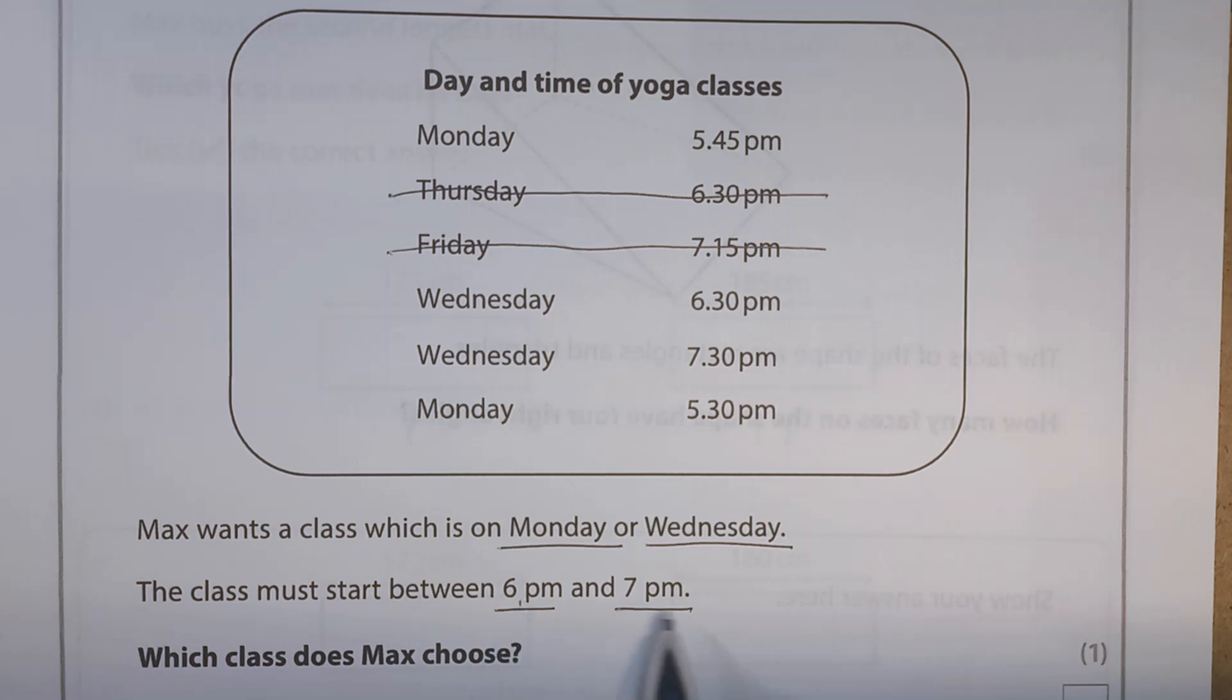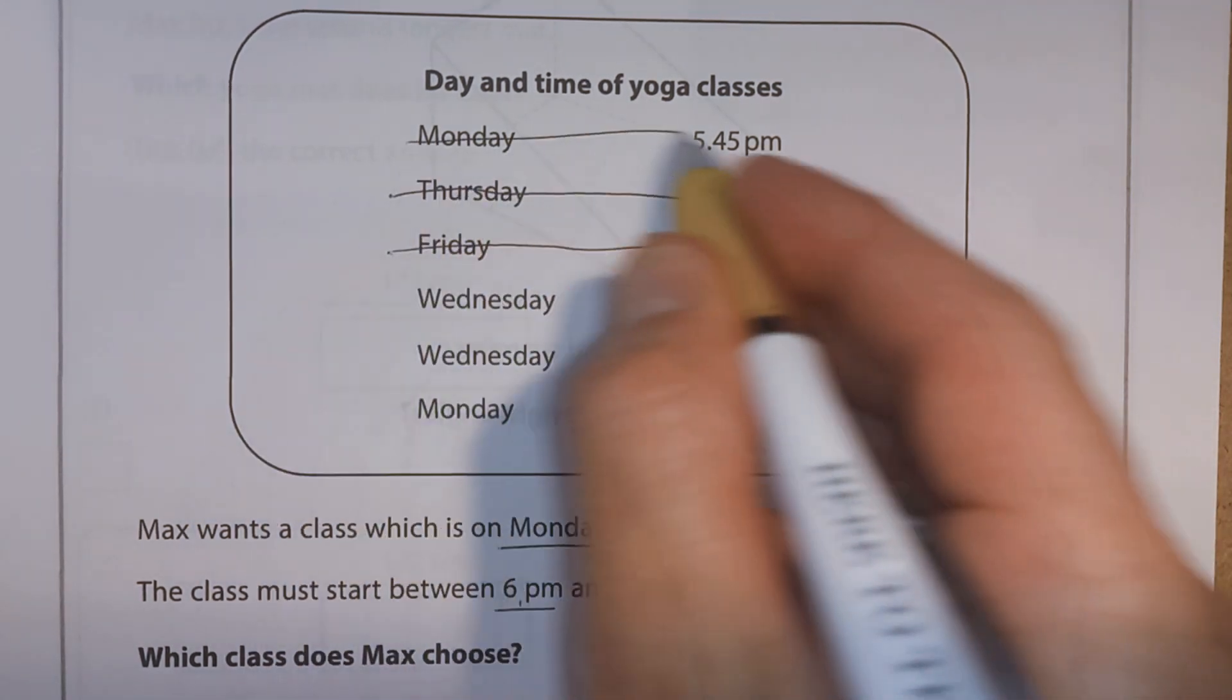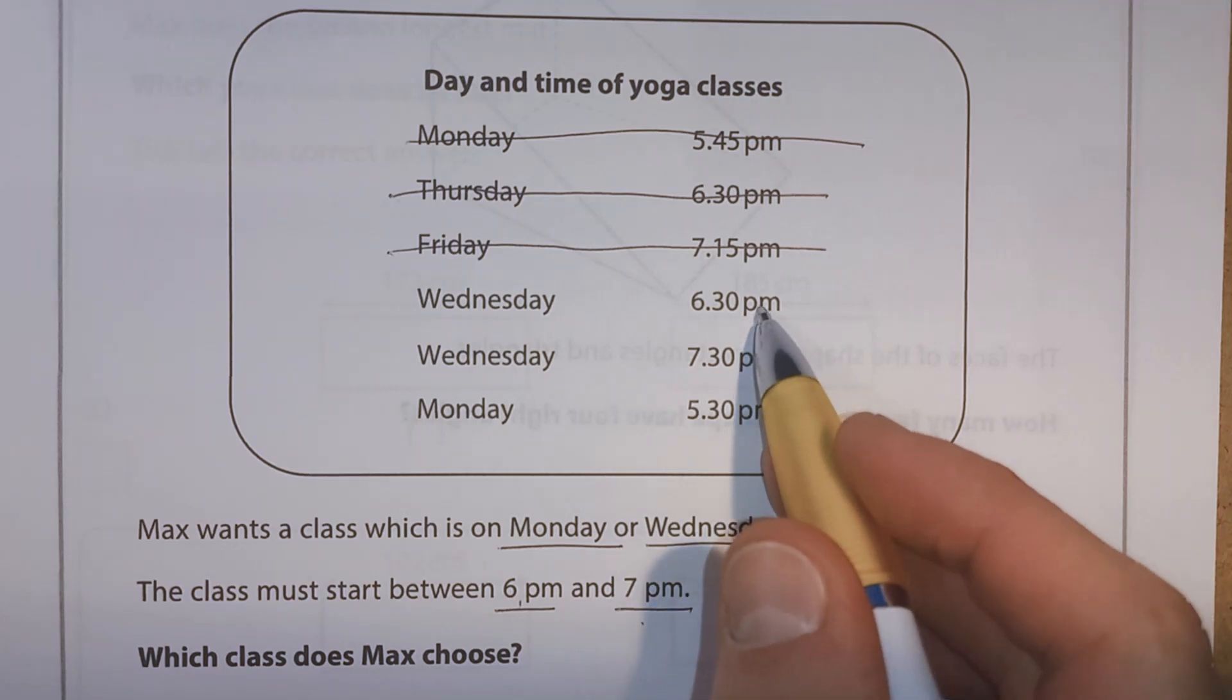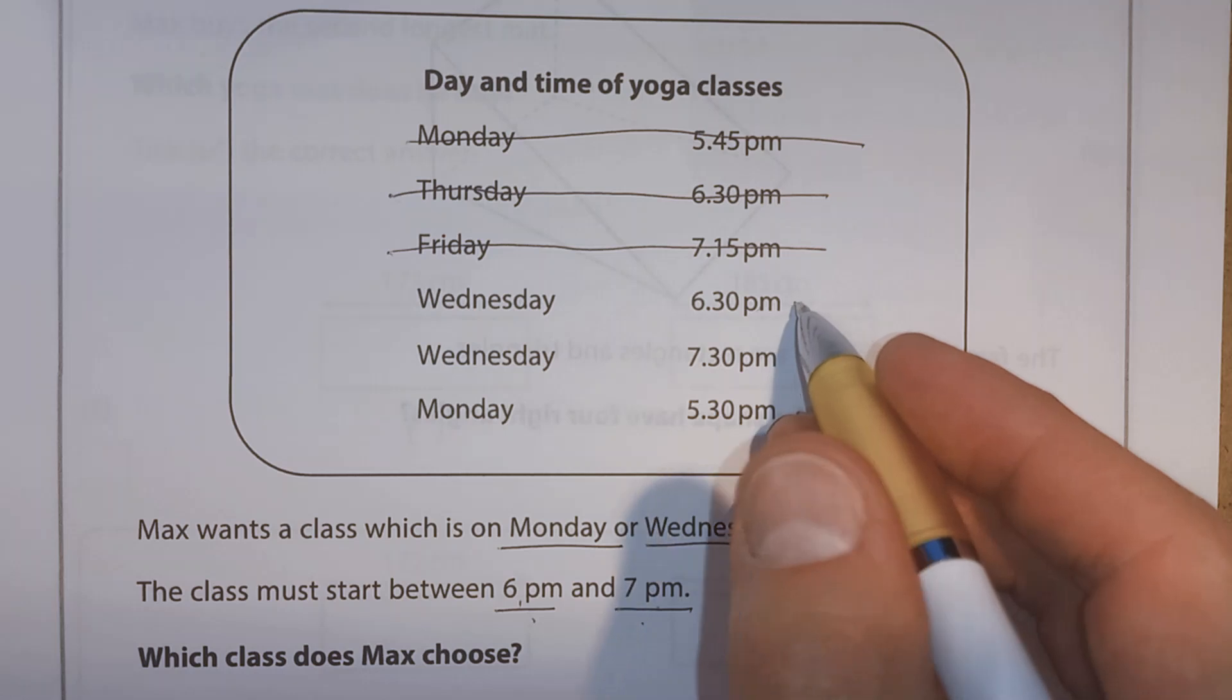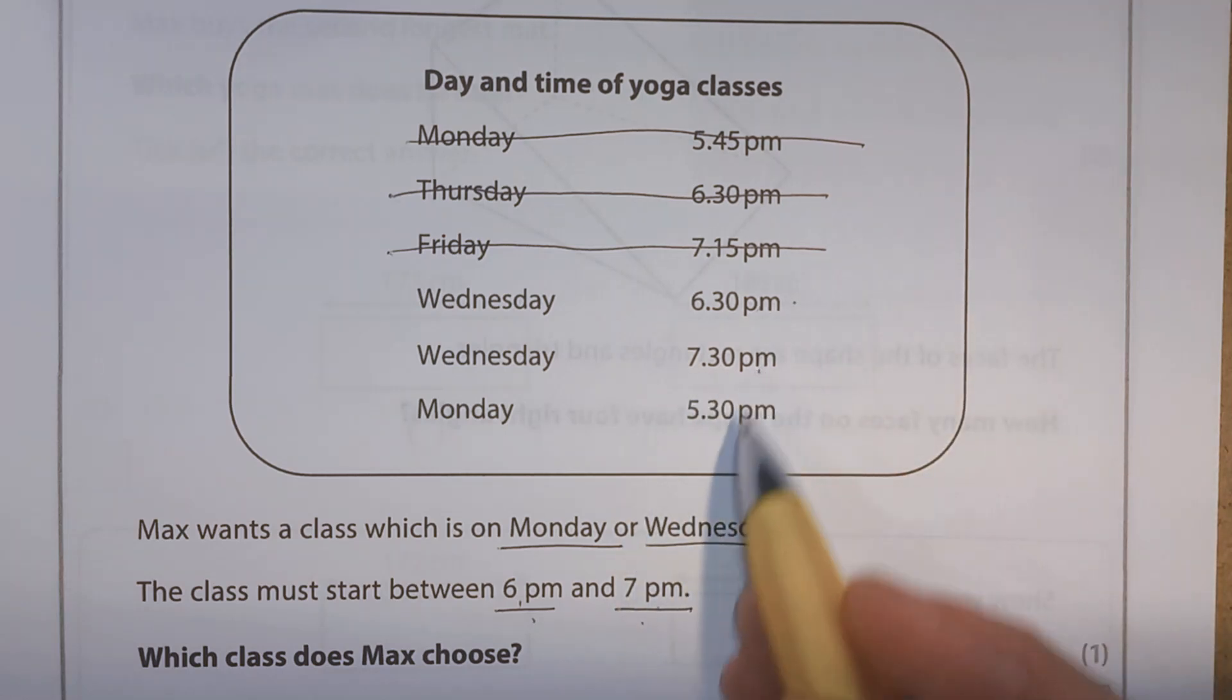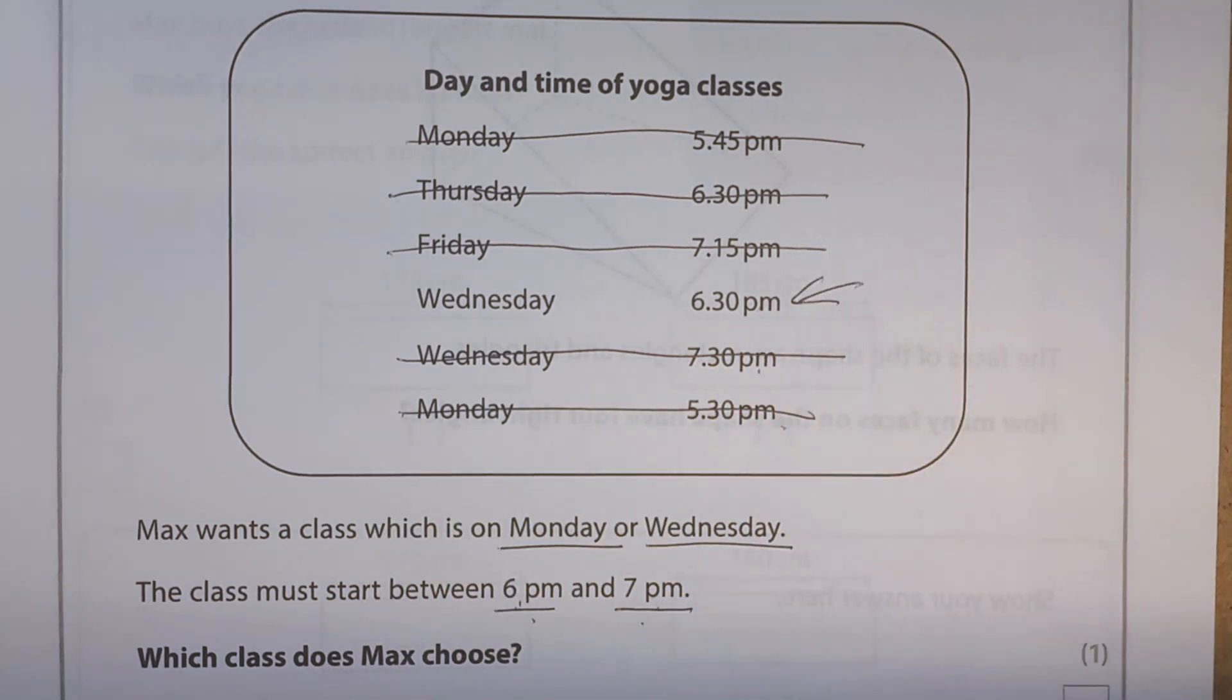It's going to start between 6pm and 7pm. Well, 5:45, that's before 6pm, so that's no good. 6:30, well that's after 6pm and before 7pm, so this one's looking good. Let's check the others. 7:30, that's after 7pm, so that's no good. And 5:30, that's before 6pm. So yeah, that's the one we want. So we can just write Wednesday, 6:30pm.